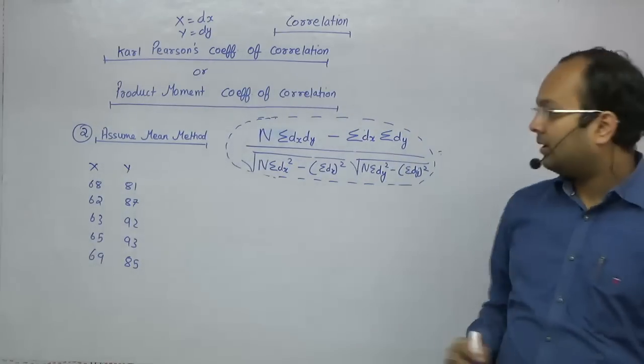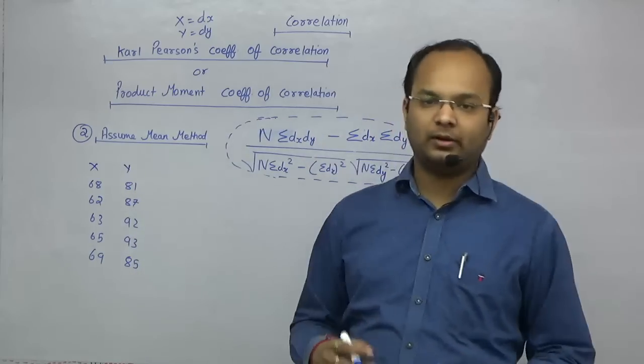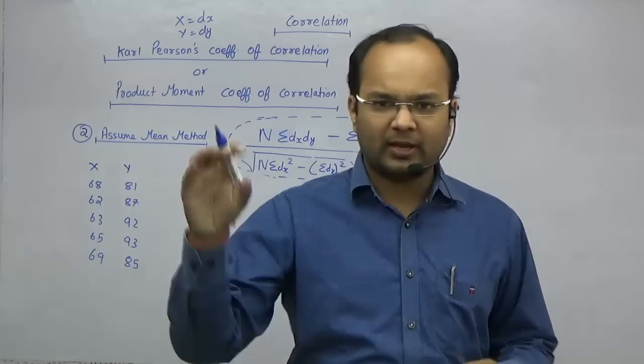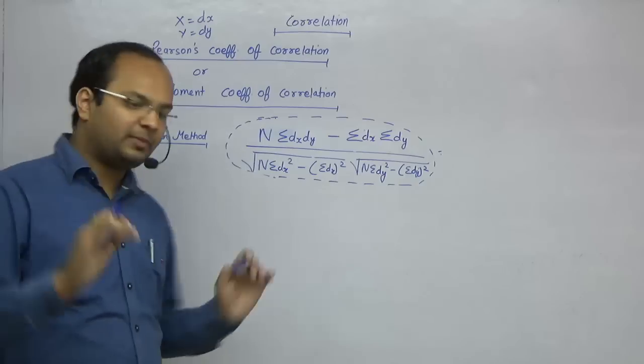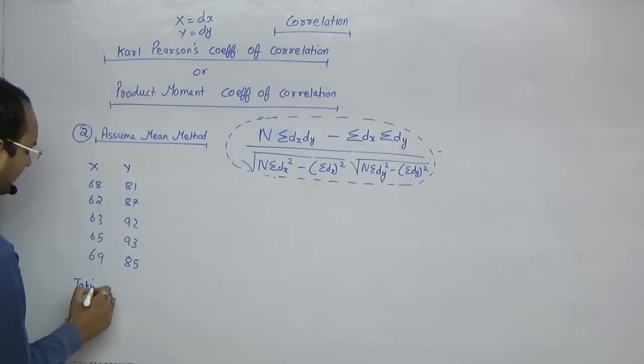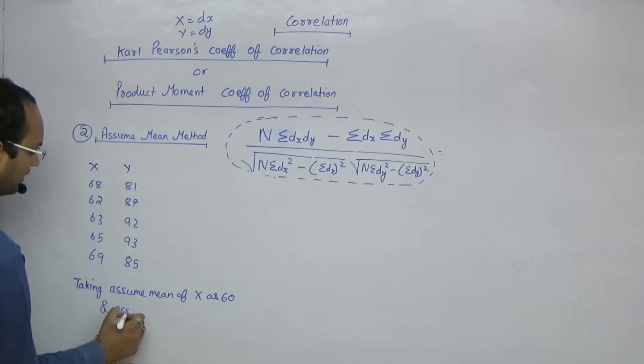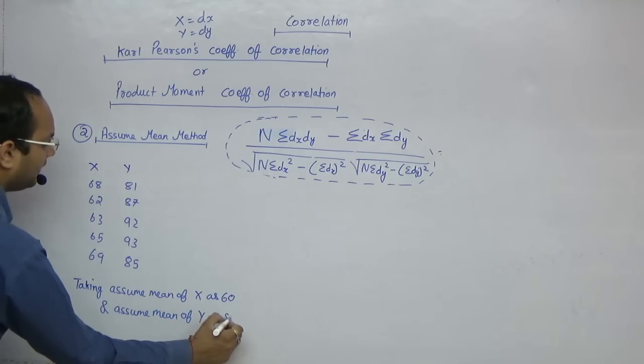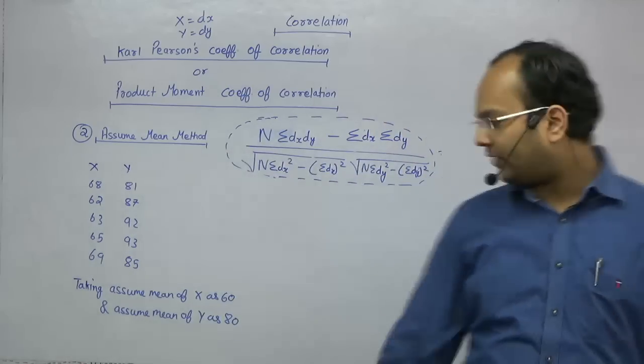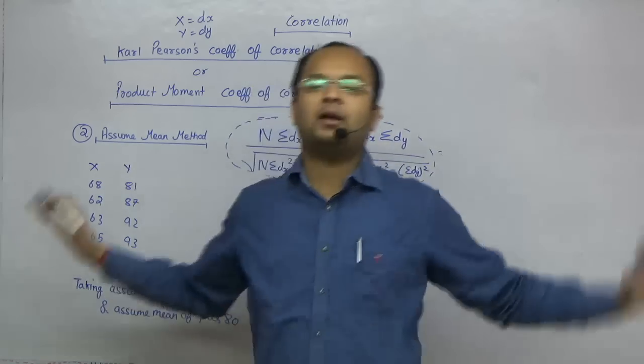If you do this by direct method, the problem is these are very large terms. When you square them, the computation becomes very technical and lengthy. So what we do is assume any number as the assumed mean.